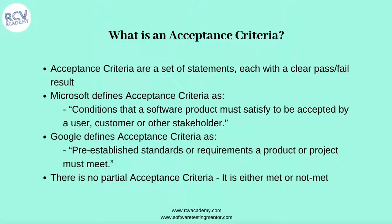Google defines acceptance criteria as pre-established standards or requirements a product or project must meet. When defining a user story, you establish standards such as valid login using Google credentials, or that invalid credentials should fail. It's also important to note there is no partial acceptance — criteria are either met or not met. Unless all defined criteria are satisfied, you cannot say the acceptance criteria has been met.